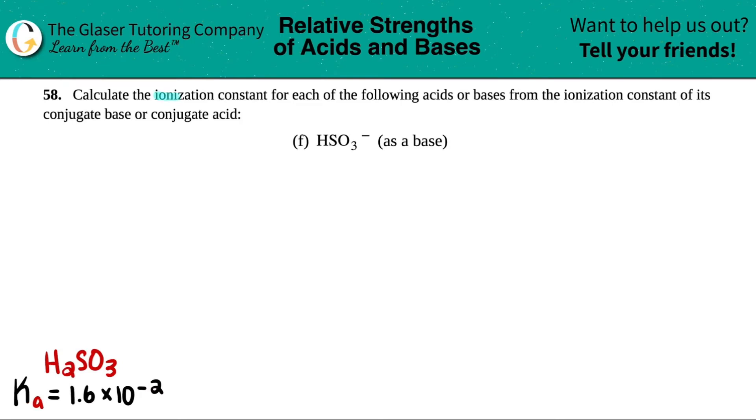Number 58. Calculate the ionization constant for each of the following acids or bases from the ionization constant of its conjugate base or conjugate acid.